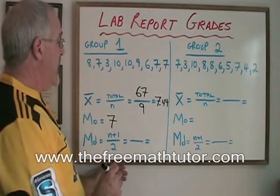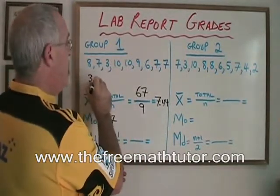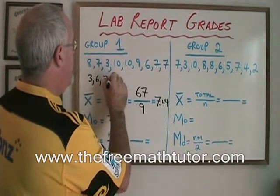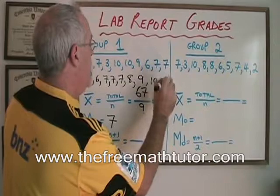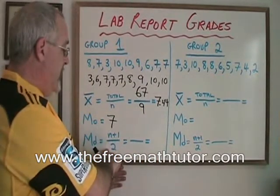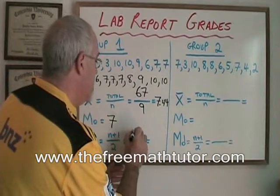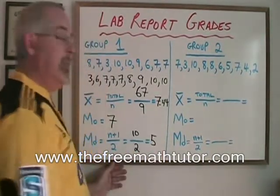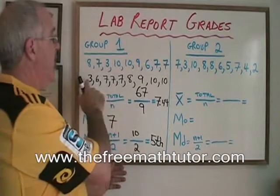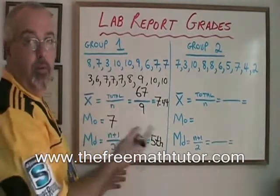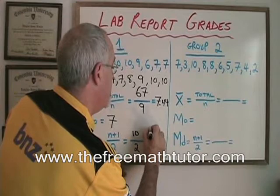Now we have to find the median. To find the median, the first thing I want to do is reorder the data from smallest to largest. So I end up writing 3, 6, then three 7s, 8, 9, 10, 10. Then I apply the median formula: (n+1)/2, where n is the sample size of 9. So (9+1)/2 = 10/2 = 5. That doesn't mean the median is 5 — it means the median is the fifth value when reading through the distribution ordered from smallest to largest. The fifth value counting from either end is 7, so the median is 7.